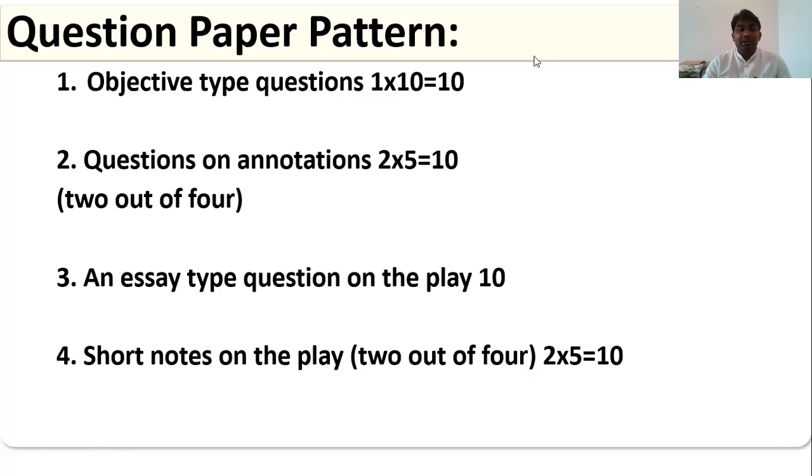We are going to discuss the question paper pattern. First section in your question paper is objective type questions. They will ask you 10 objective type questions and each question carries one mark. You have to remember that there is no options in the first section. You have to attend all 10 questions. Objective type questions means you have to answer in a word or a sentence.